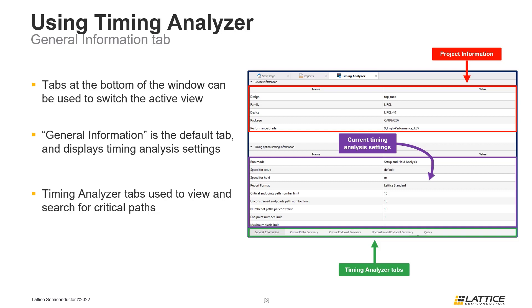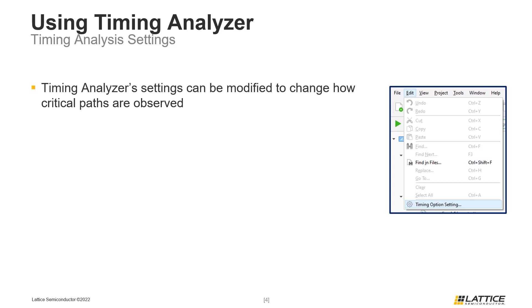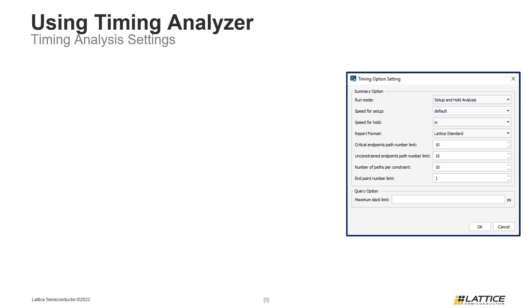Now that we've discussed the basics of Timing Analyzer's General Information tab, we are going to discuss how the Timing Analysis settings can be modified. By default, the Timing Analyzer tool will display the 10 most critical paths for setup and hold violations. A useful feature of Radiant's Timing Analyzer tool is that these Timing Analysis settings can be modified to change the requirements for critical paths and how many paths are observed. To begin modifying the Timing Analysis settings, select Edit from Radiant's menu bar, then select Timing Option Settings from the drop-down. The default values for each setting depend on the place-and-route timing analysis settings of the active strategy in an implementation.